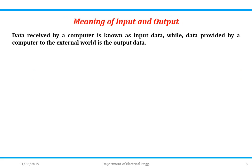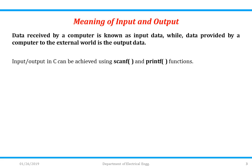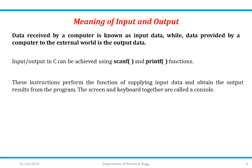What is the meaning of input and output? The data received by a computer through a keyboard is input data, while the data provided by a computer to the external world is output data. In C, this can be achieved with scanf and printf functions. The printer is an output device, so printf is the output statement, whereas a scanner is an input device, so scanf is the input instruction. The screen and keyboard together are called a console.